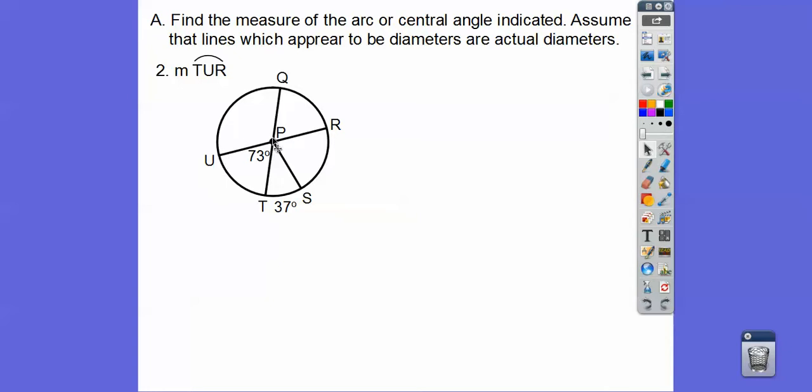Now, there's a couple of diameters. I'm going to use this diameter right here. So that's 180 right there. So now we can just use the arc addition postulate. If that's 73, that's 73.